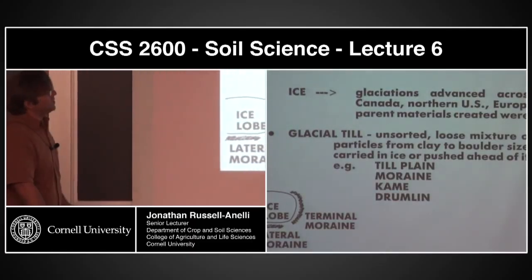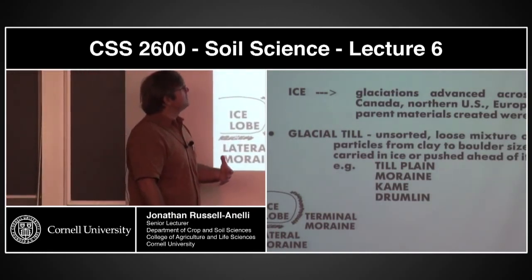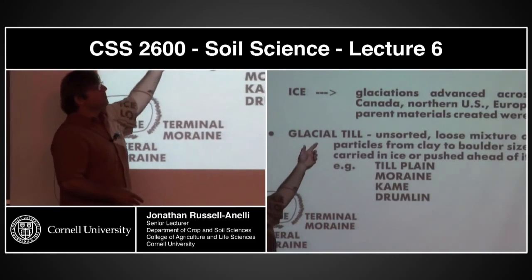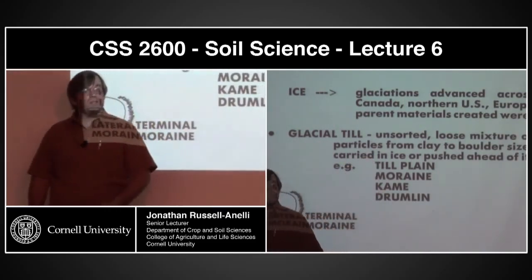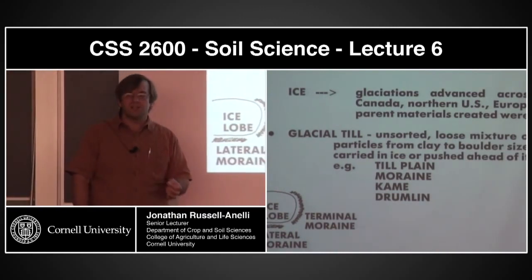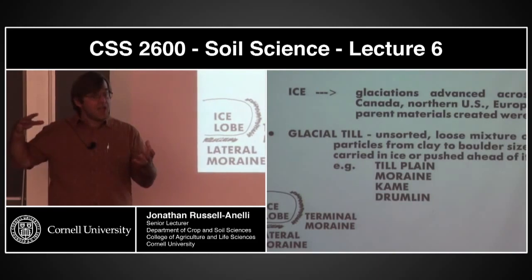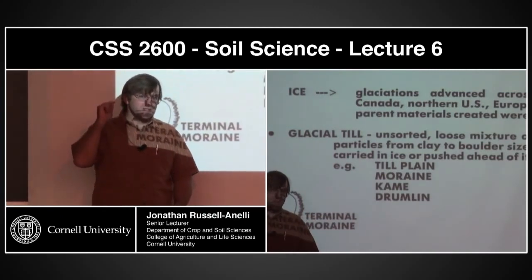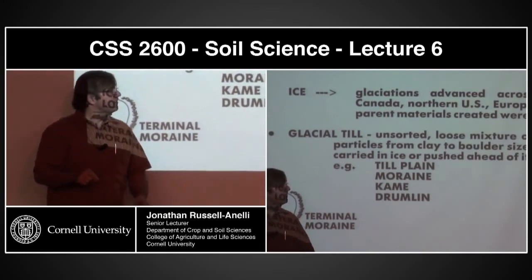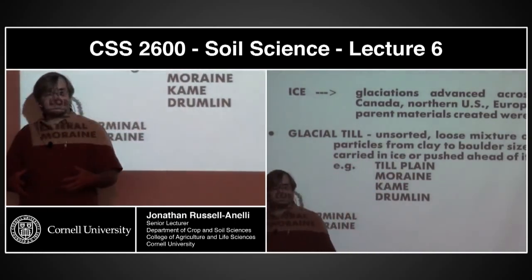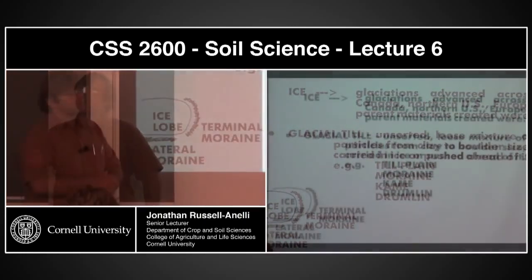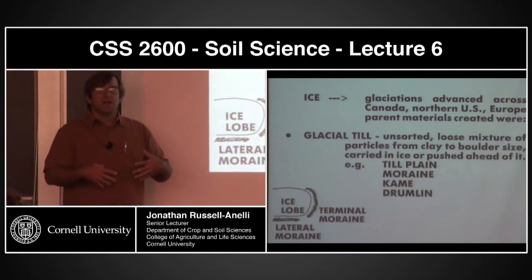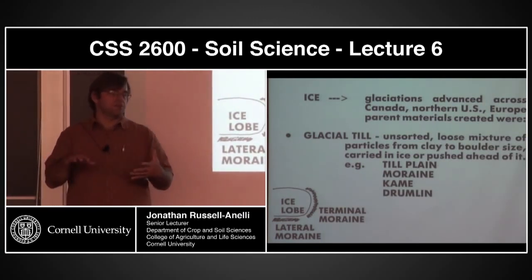We also have ice. Glaciation advancing across the north of the United States and Europe pushes through, grinds stuff up, and also carries stuff with it. Because of its process, this material is basically unsorted — everything from huge gigantic boulders all the way down to clay-sized stuff. As it's transporting material, things are being ground up more, so even if you started as a boulder way up in Canada, by the time it made it down here it could be clay-sized. You get this unsorted loose mixture of particles from clay to boulder size — all different kinds of sizes, shapes, colors, materials, and mineral types.